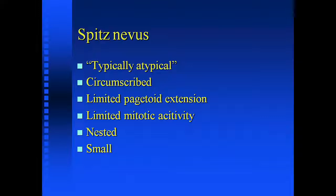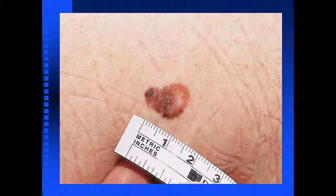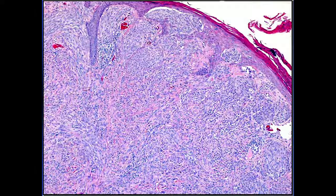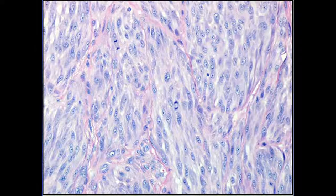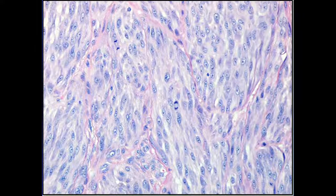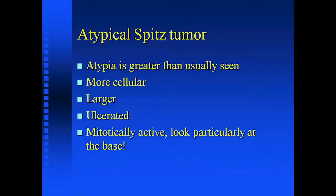Every once in a while you get a lesion that clinically looks atypical, like a pseudopod. It has spindle cells but is a little bit more cellular than your typical Spitz nevus. There may be something that looks like a Kamino body — which is supposedly diagnostic of benignancy — yet there are numerous mitotic figures. One of the most disturbing things in any melanocytic lesion by routine histology is any mitotic activity whatsoever, and it's particularly bad if it's in certain locations within the biopsy.